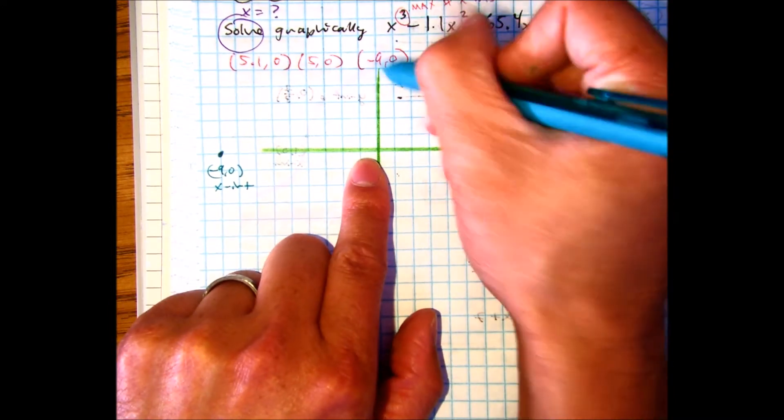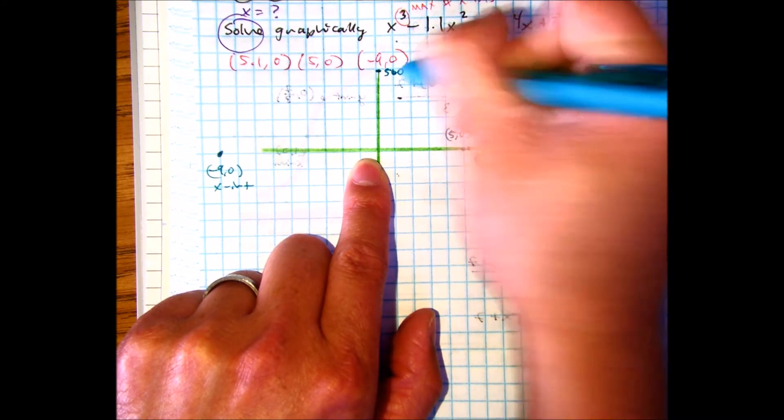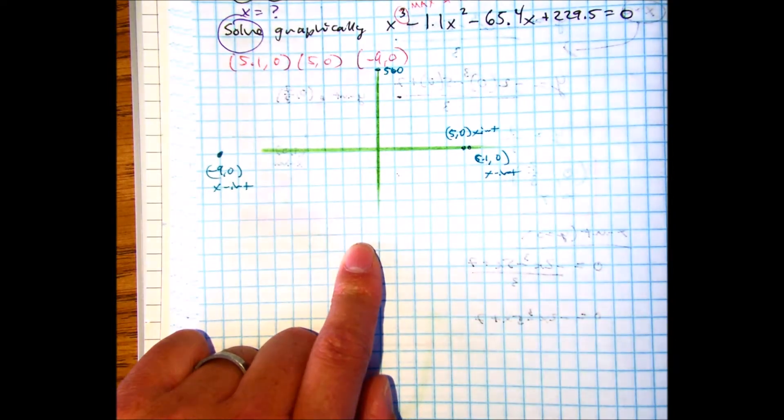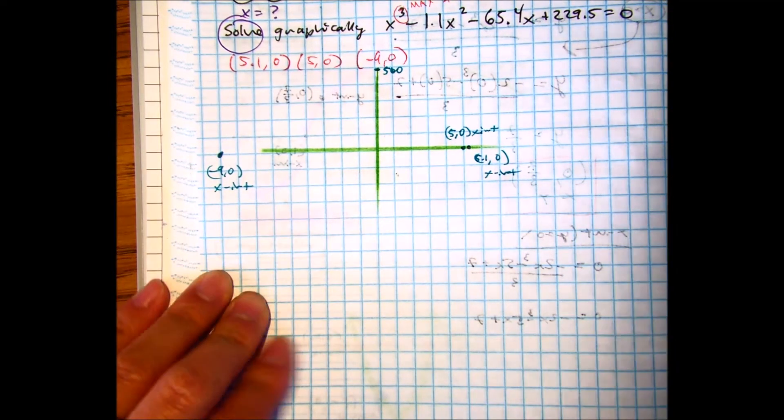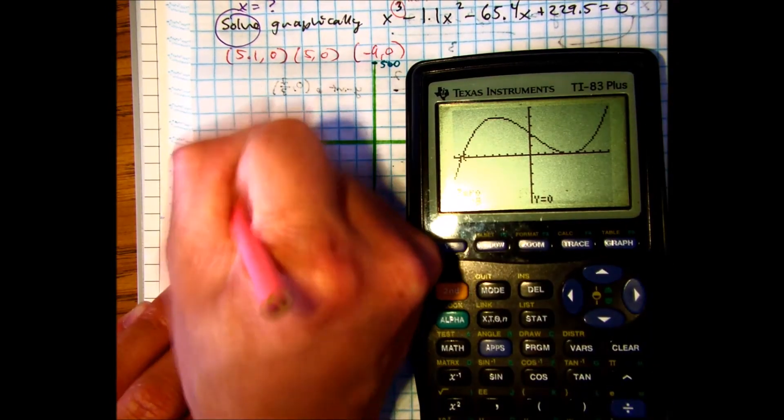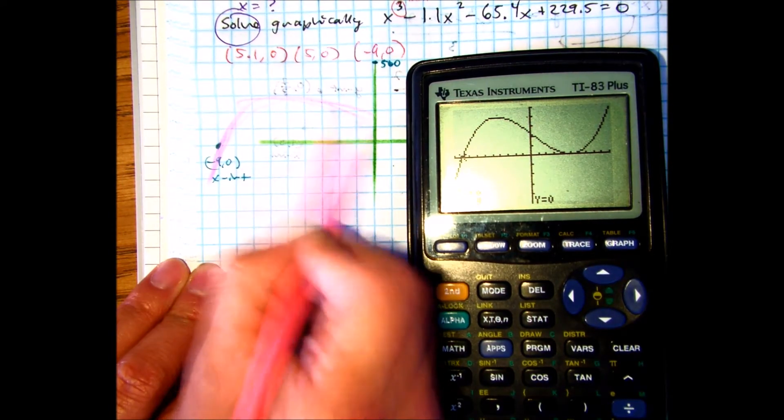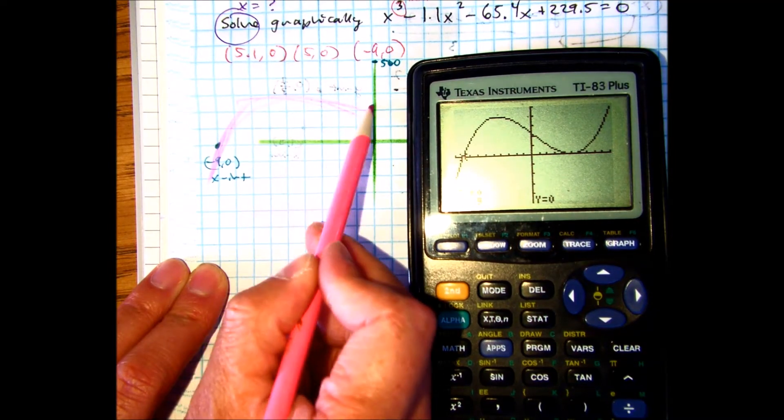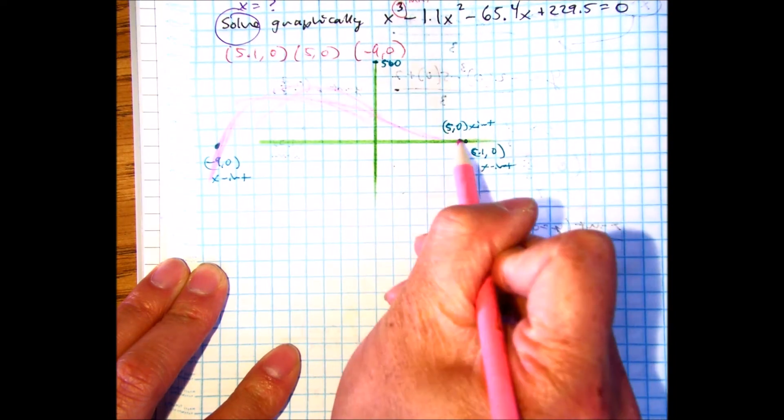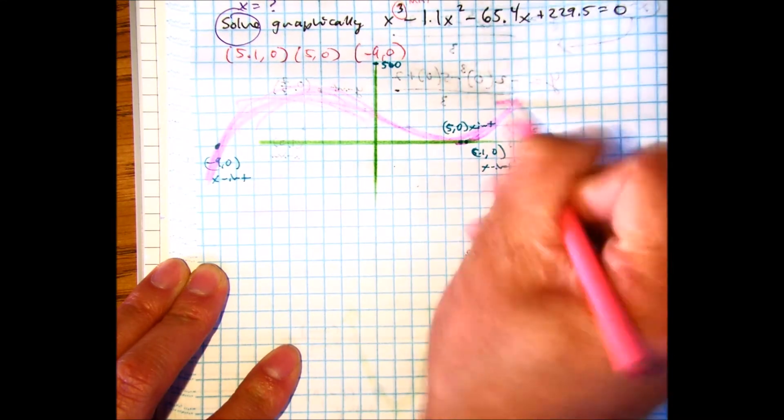And you can also tell its scale, so 1, 2, 3, 4, 5, that's 500, counting by one hundreds. And then our graph looks, that one's like 200, that goes through there, and our graph looks like something like this.